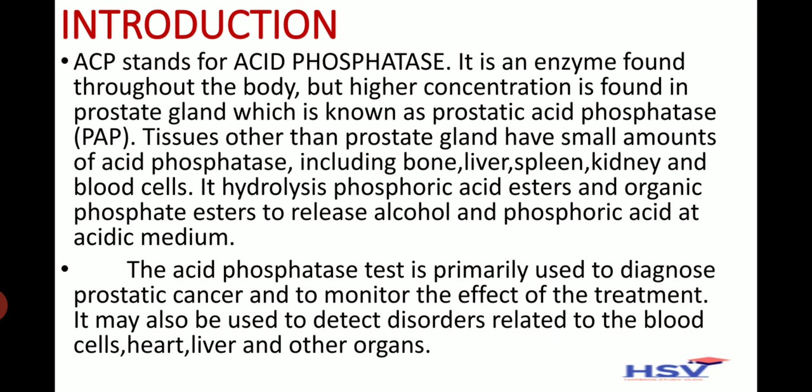Tissues other than the prostate gland have smaller amounts of acid phosphatase, including bone, liver, spleen, kidney, and blood cells. ACP hydrolyzes phosphoric acid esters and organic phosphate esters to release alcohol and phosphoric acid at acidic medium.